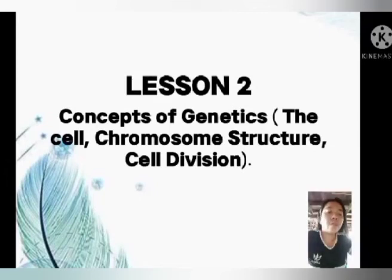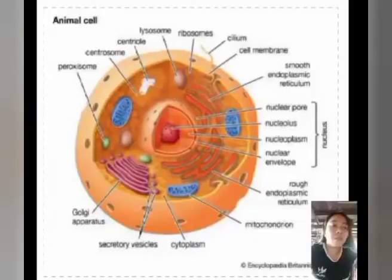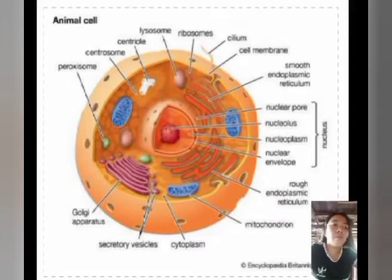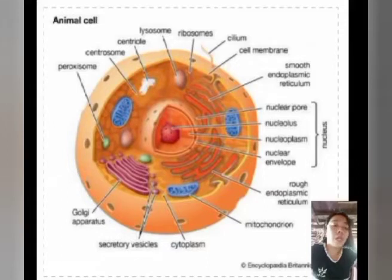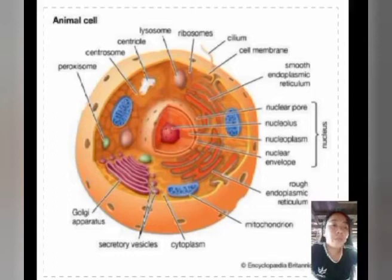Next is Lesson 2: concept of genetics — the cell, chromosome structure, and cell division. Animal cells are typical of eukaryotic cells, enclosed by a plasma membrane and containing a membrane-bound nucleus and organelles.